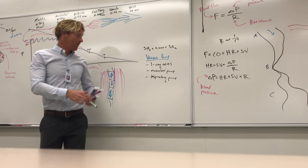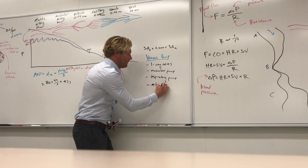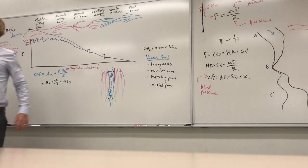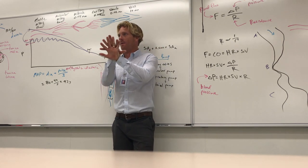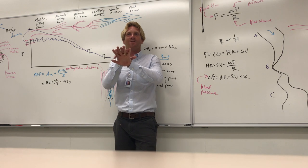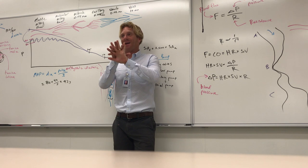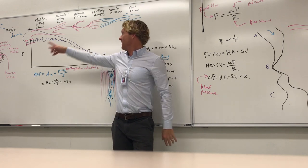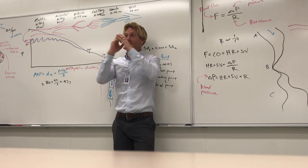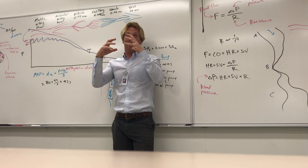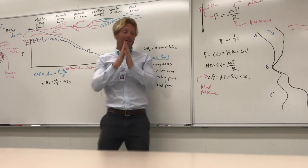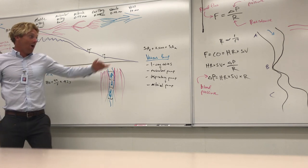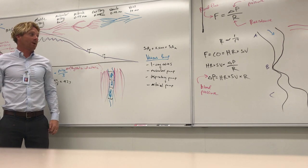The respiratory pump is especially important when we're not contracting muscles — just sitting around. The last mechanism is the arterial pump: large muscular and elastic arteries are right next to veins. Every time the heart beats and those arteries expand, they compress the adjacent vein slightly, pushing blood in the direction of the one-way valves — upward toward the heart. Together, all four mechanisms — one-way valves, muscular pump, respiratory pump, and arterial pump — return blood to the heart.